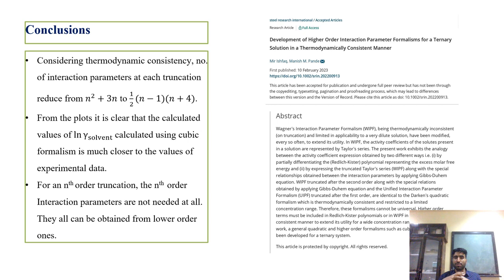We can now draw some conclusions. For an nth order truncation, we do not need the nth order interaction parameters — they can all be obtained from the lower order ones. For an nth order truncation, there are m² plus 3m interaction parameters. In the case of cubic formalism, there are basically 18 interaction parameters, and they all reduce. Similarly, in the case of quartic formalism, there are 28 interaction parameters, and they reduce to basically 12.